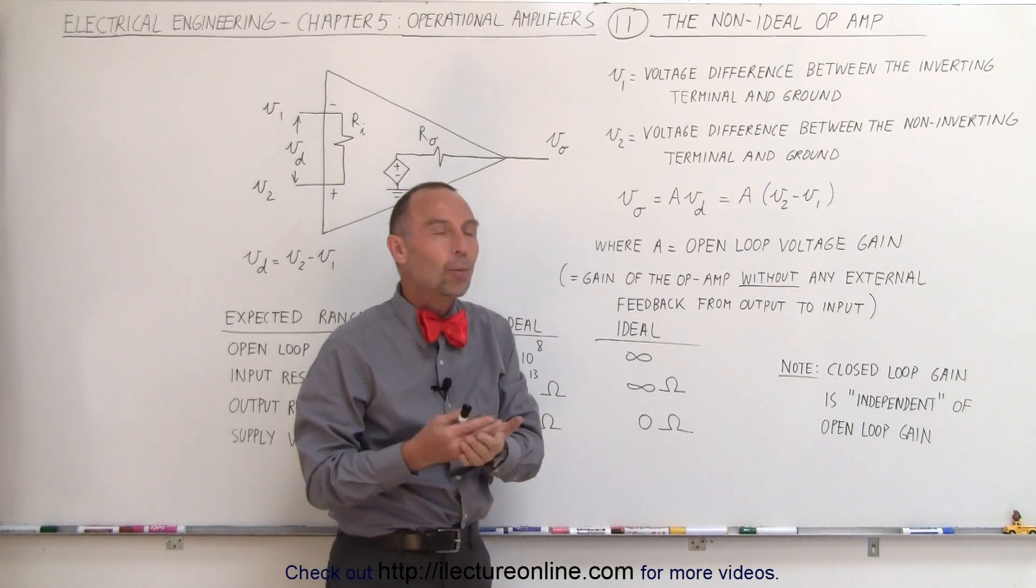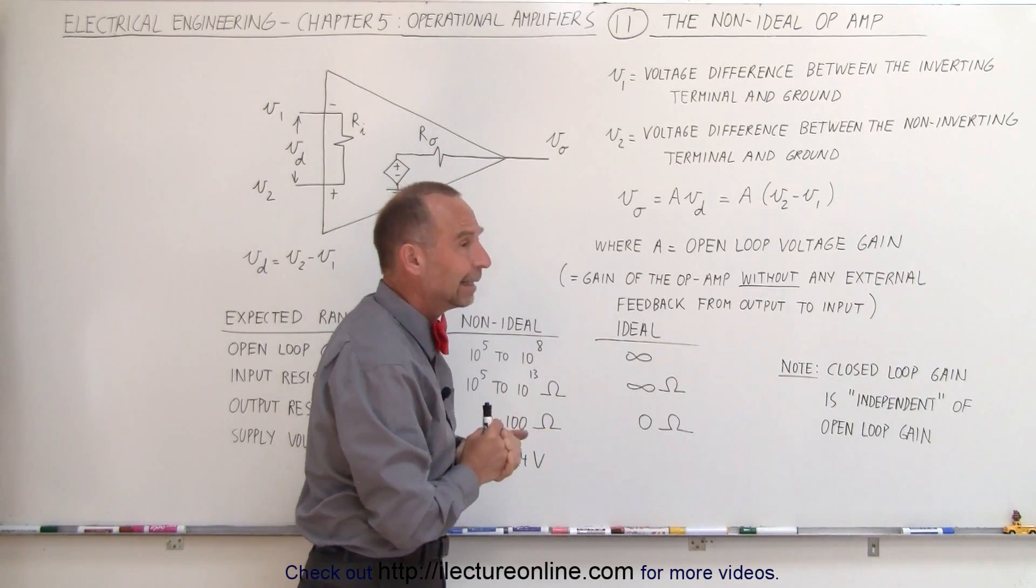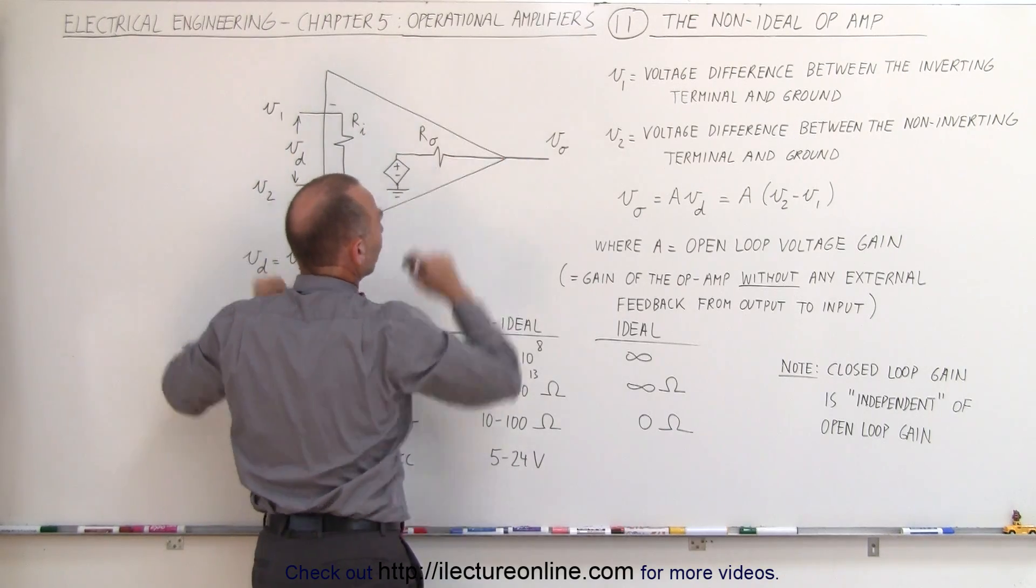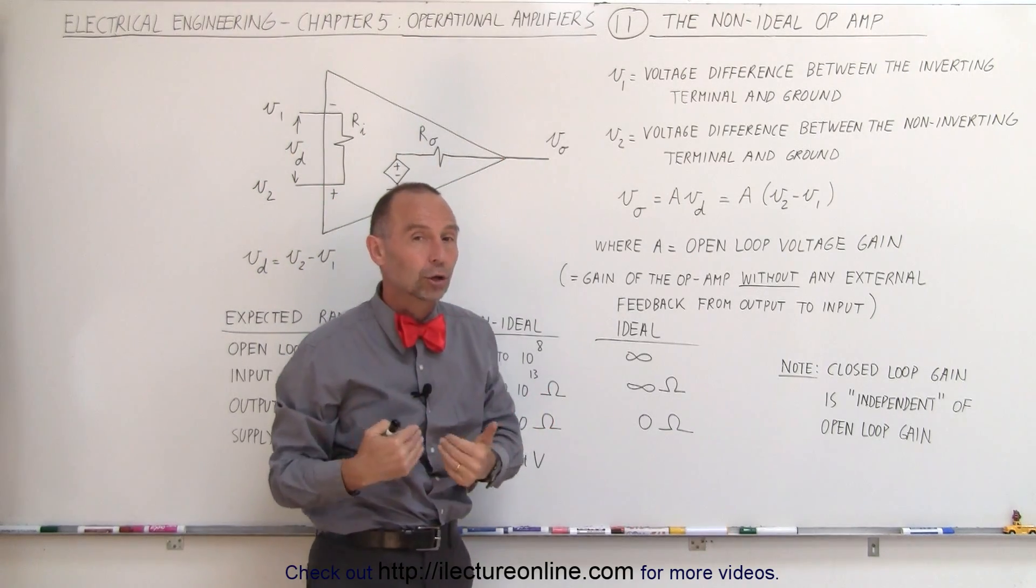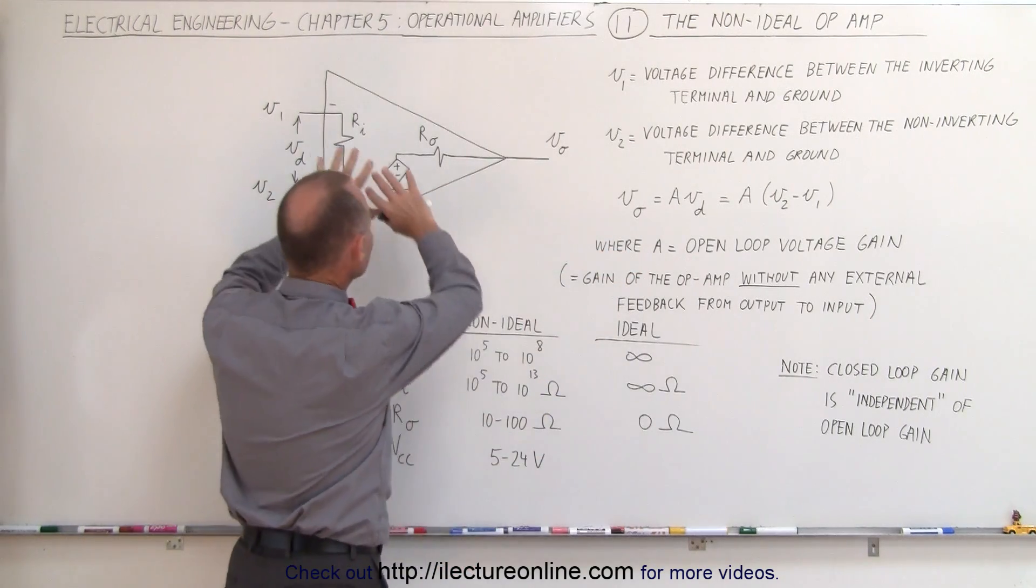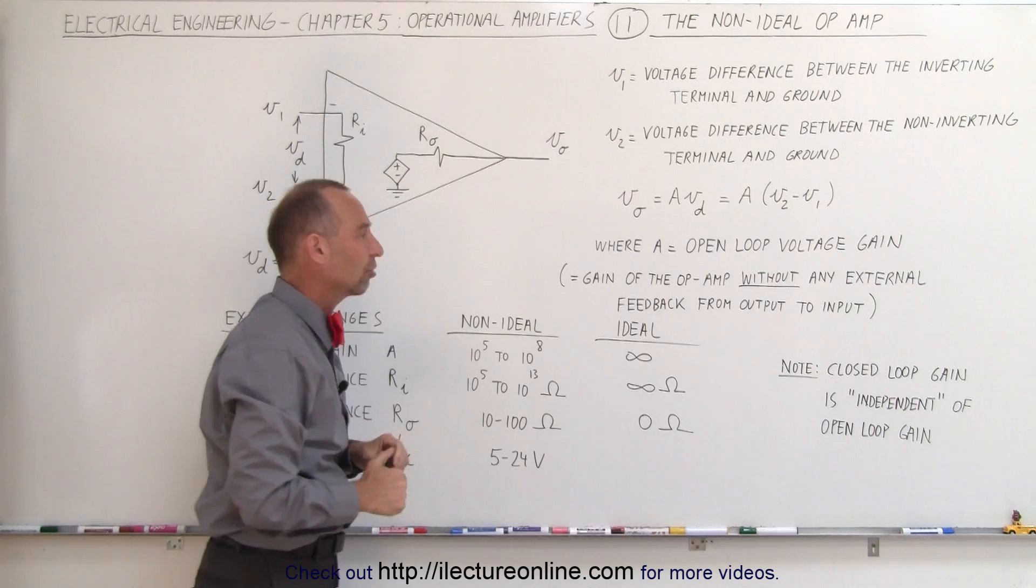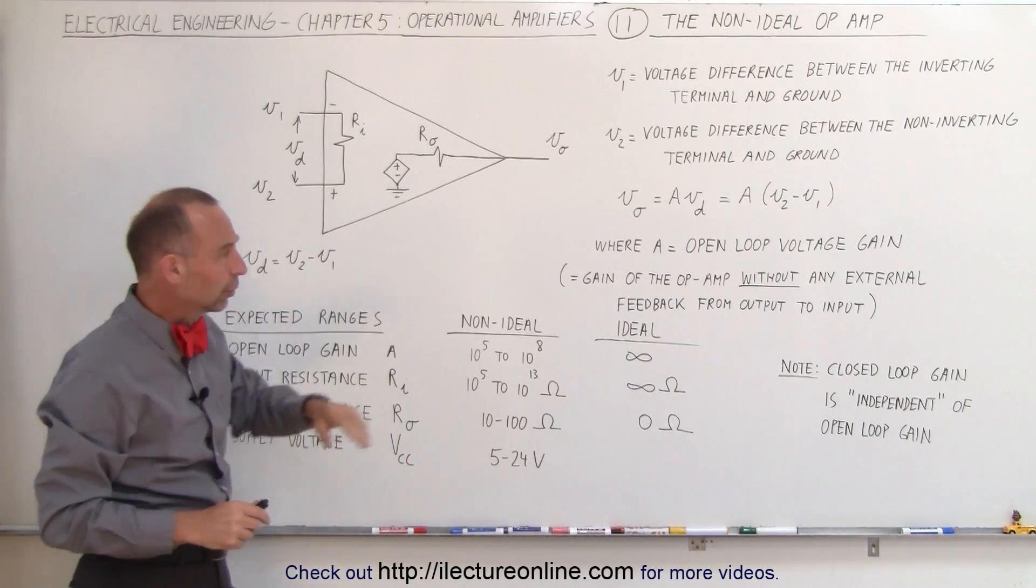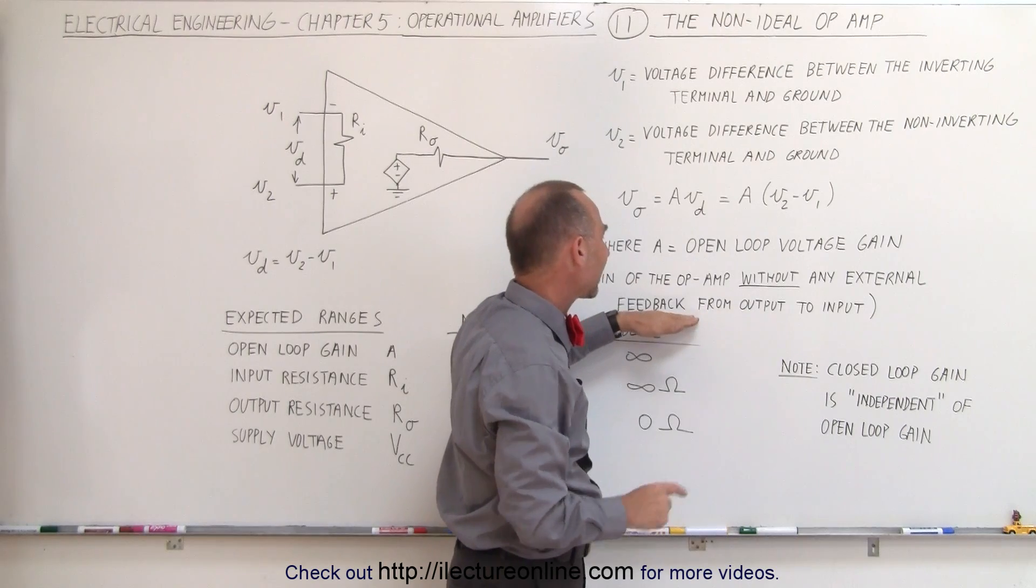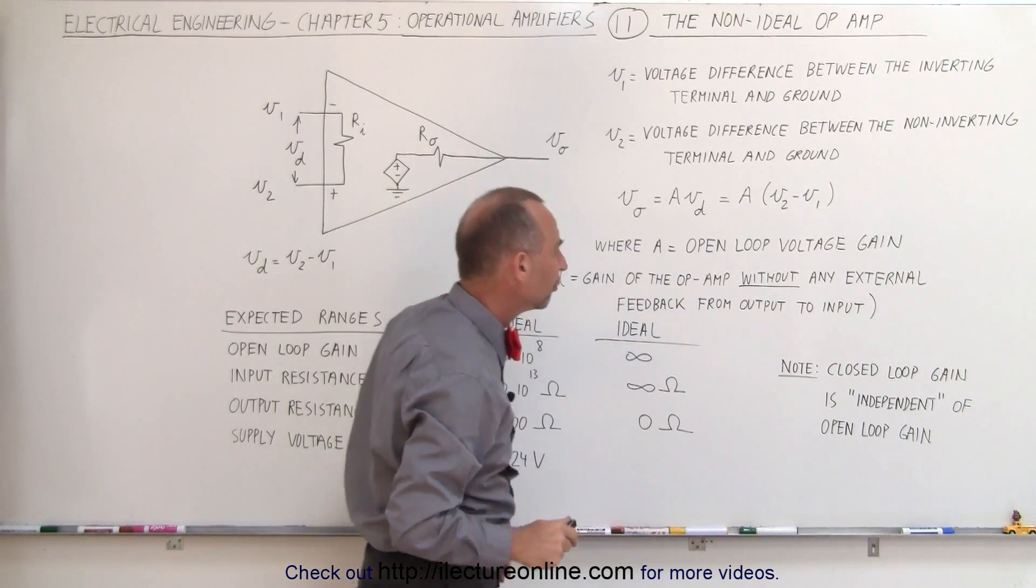Now this is what we call the open loop voltage gain. This is not affected by any external resistance that are being connected to the circuit, because then you get what we call a closed loop gain. But the open loop gain is called A and that's determined by the internal workings of the operational amplifier. Notice that the gain of the op amp without any external feedback is what we call the open loop voltage gain.